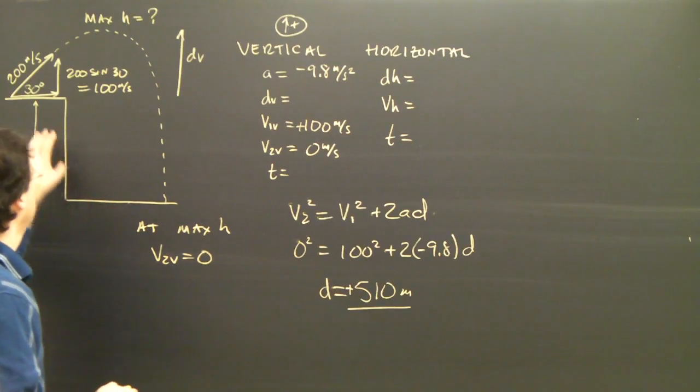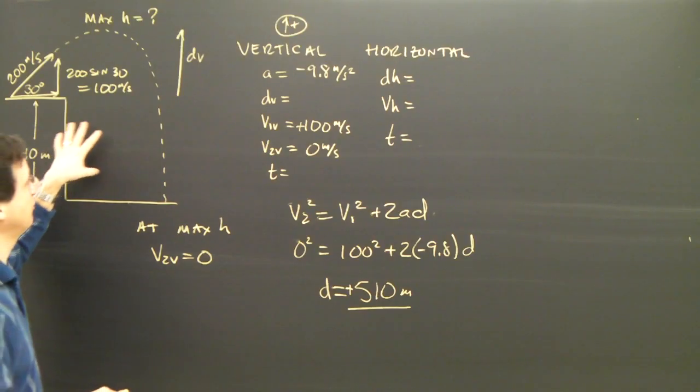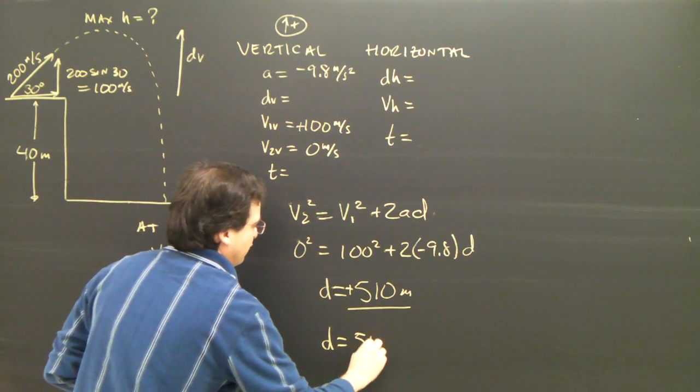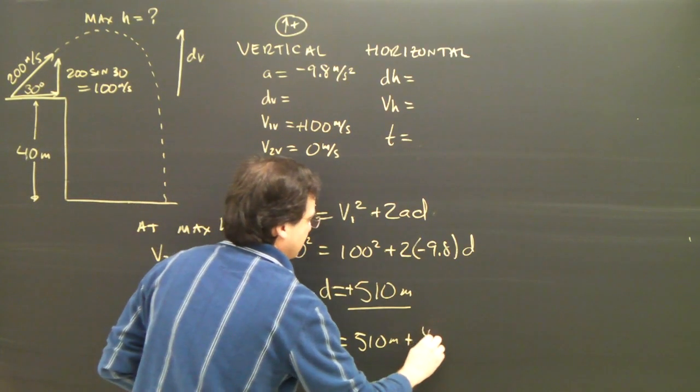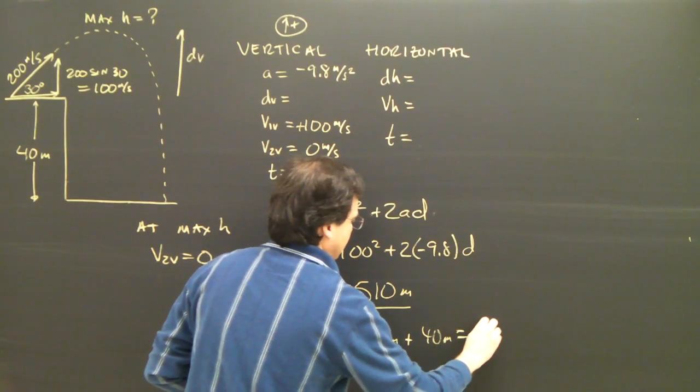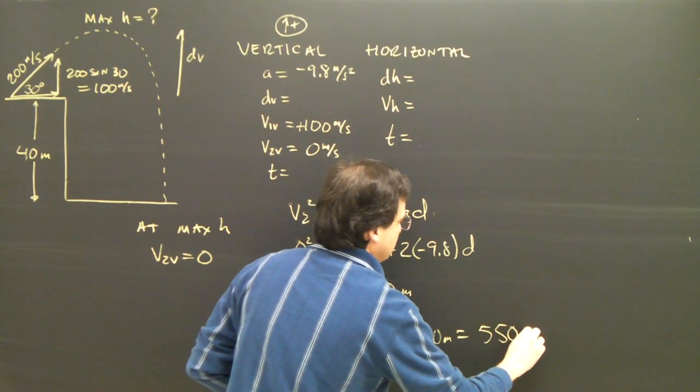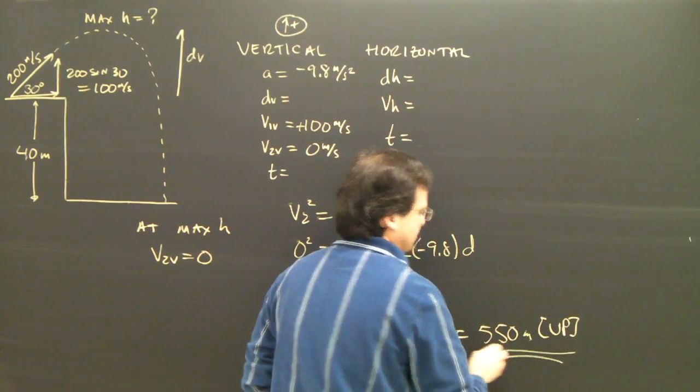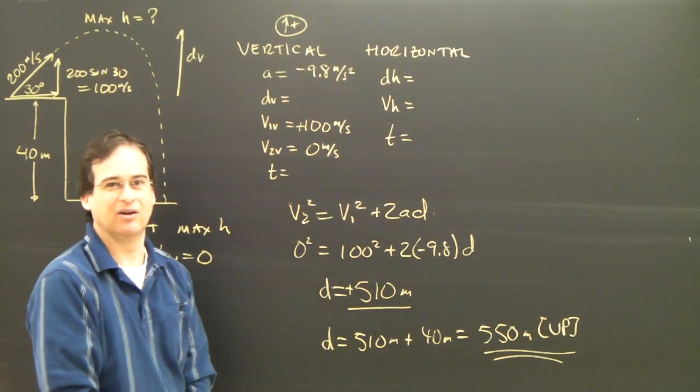But what I've got to account for now is the 40 meters that it was off the ground when it started. So the final height is the 510 meters plus the 40 meters is 550 meters. And we should give it a direction. That's the maximum height of the projectile.